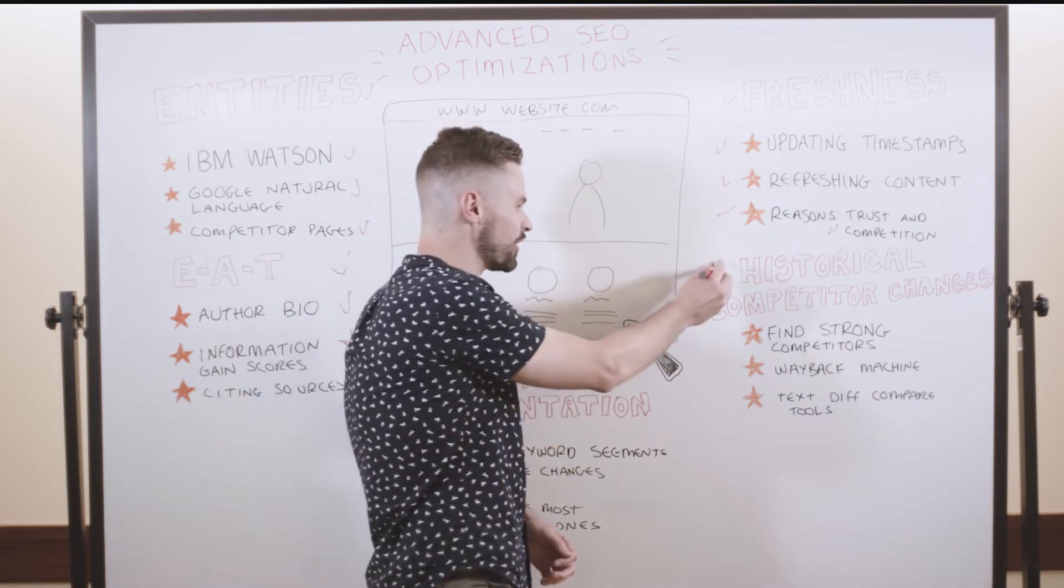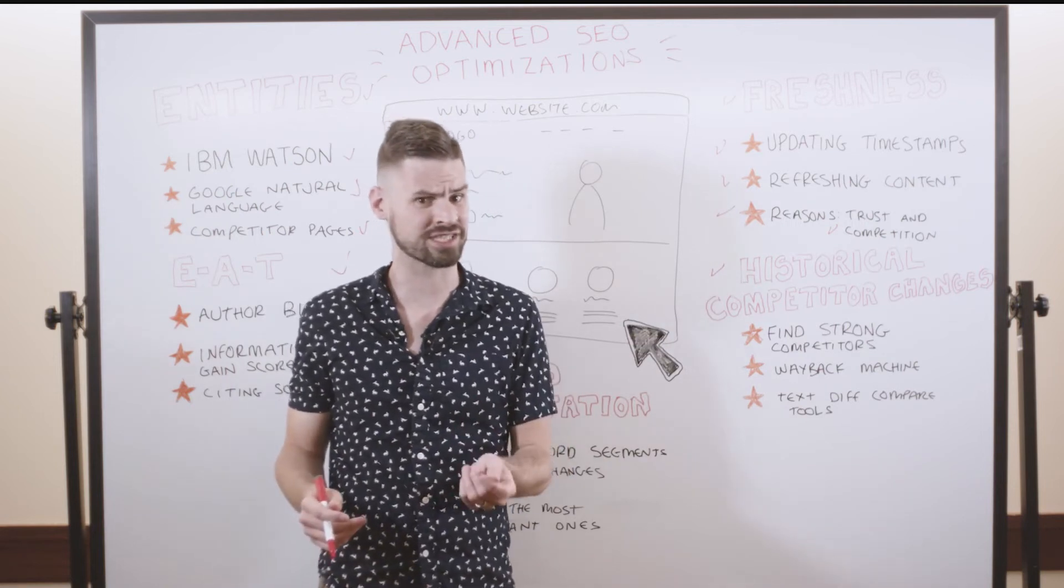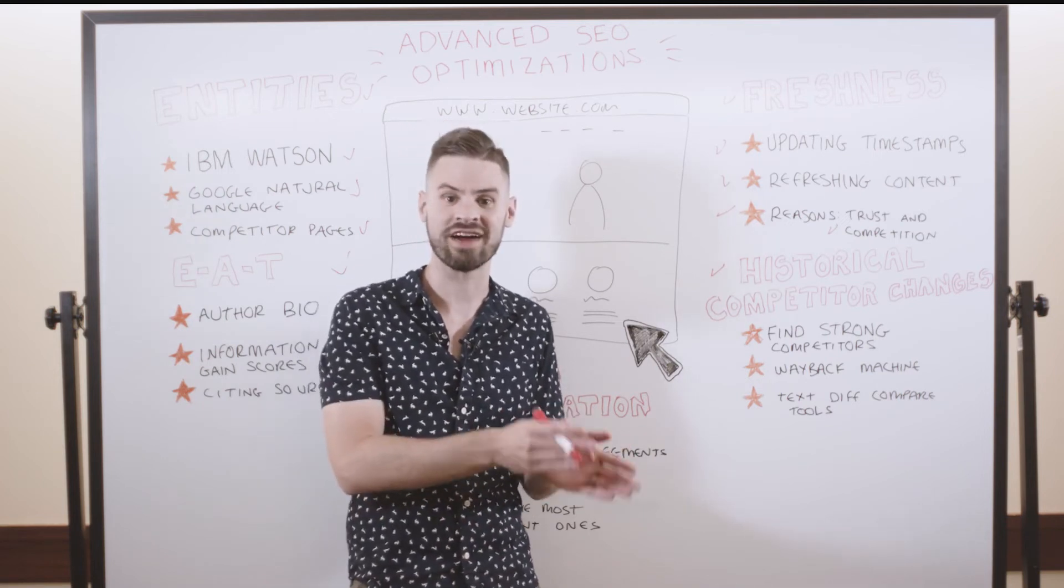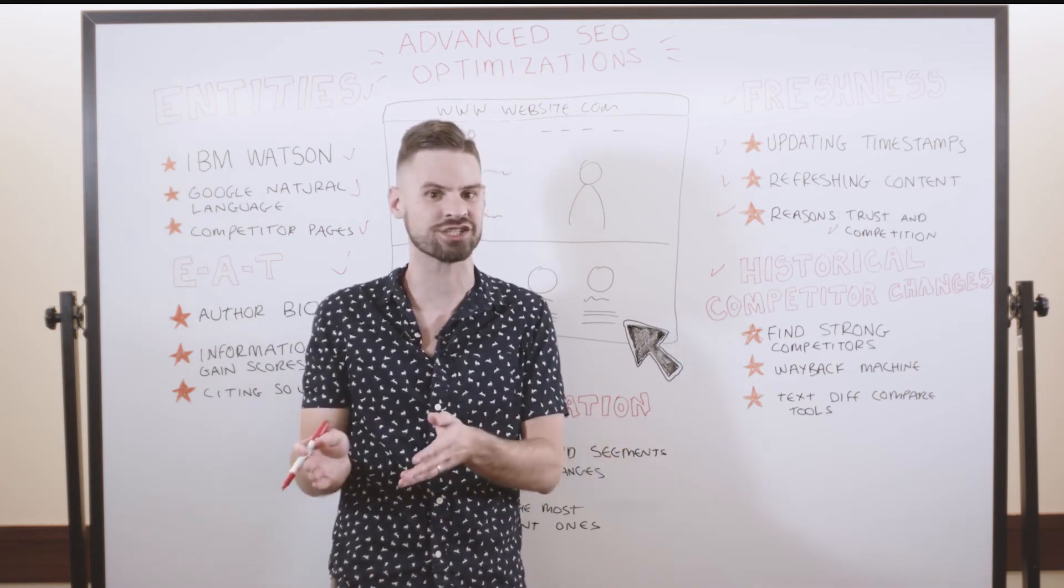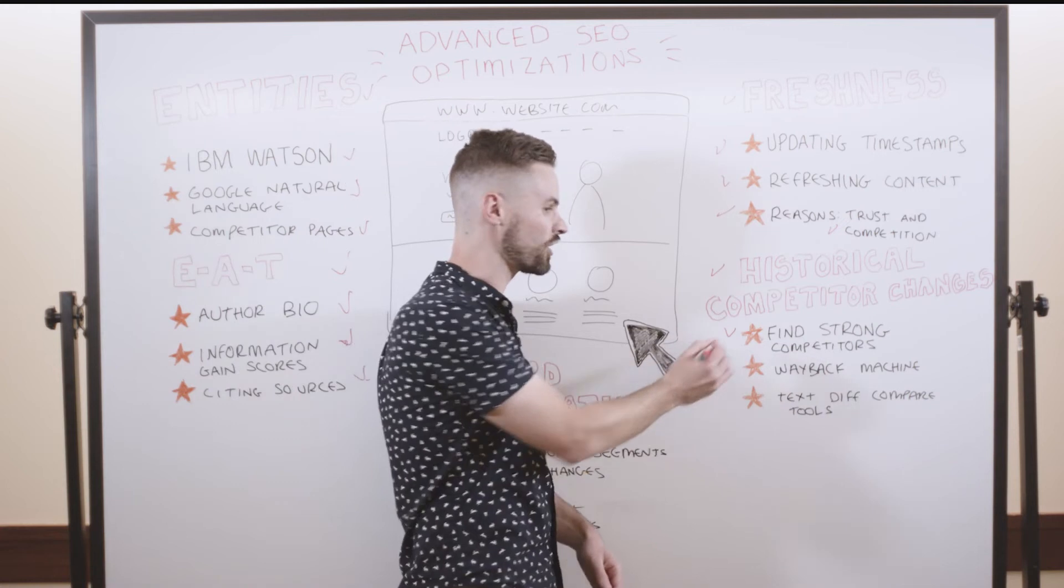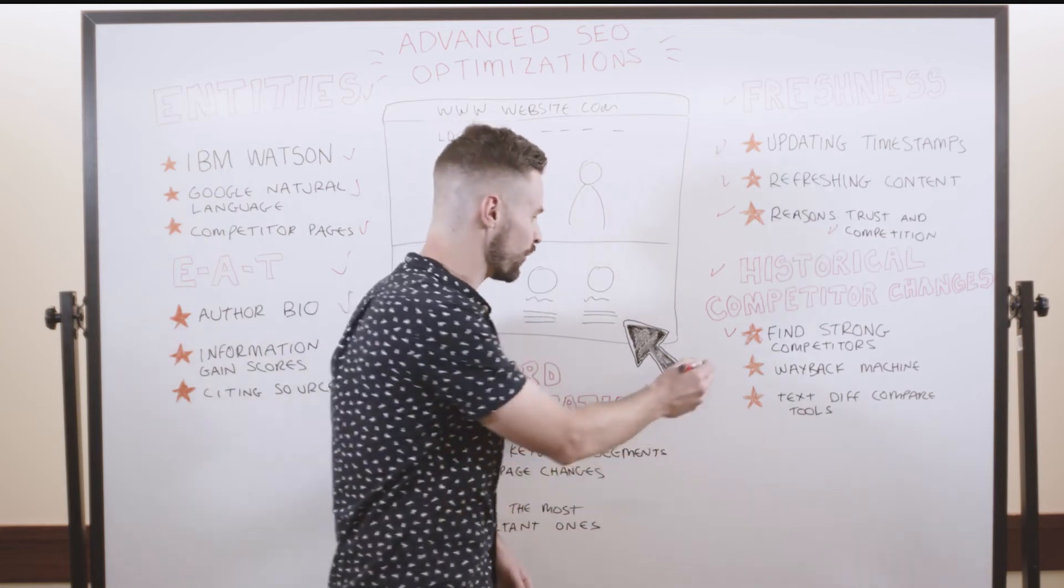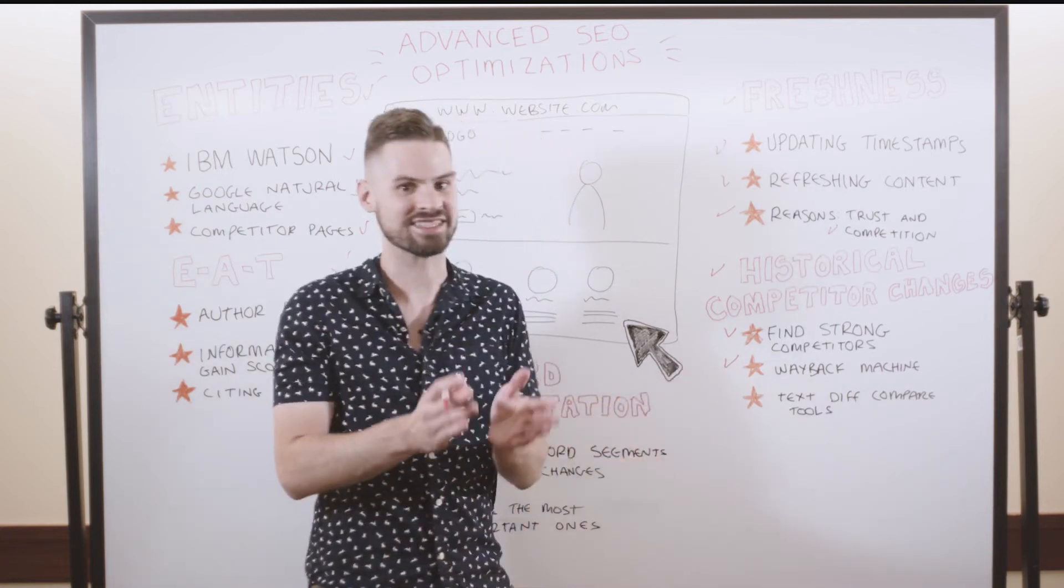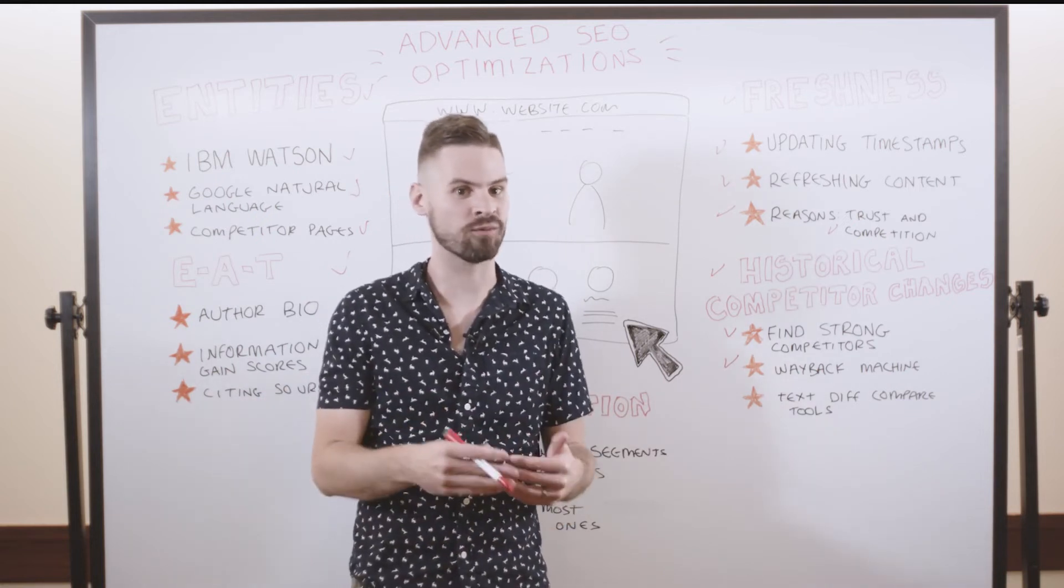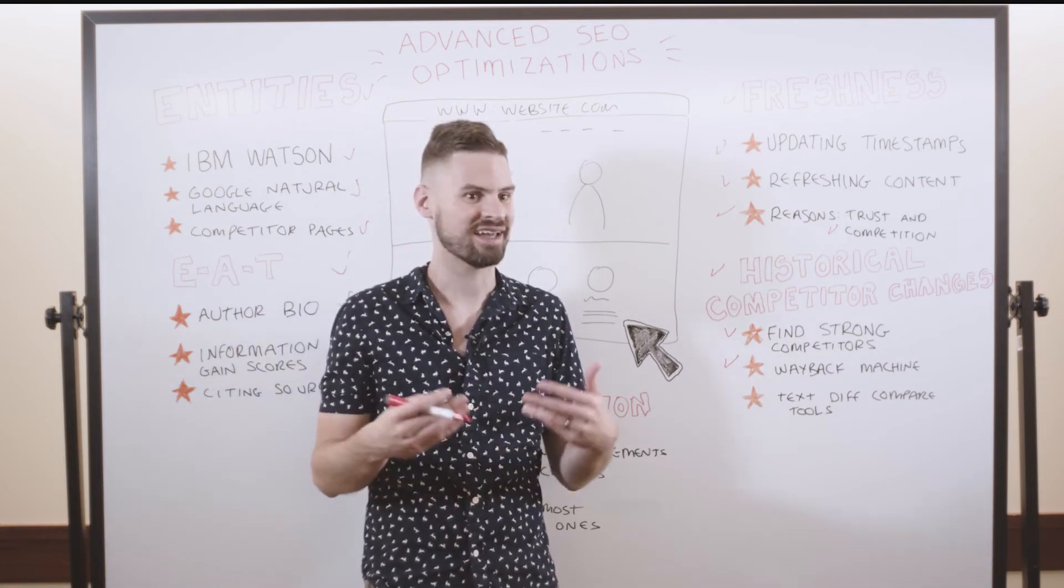Another great way of thinking about your on-page optimizations is this concept of historical competitor changes. Oftentimes, when we think about our on-page optimizations, we're only thinking about what competitors are doing in the given moment, but we're not telling the story of how they've changed their on-page optimizations in order to get to that point. So you can do this type of analysis for really competitive queries. What I like to do is find a strong competitor that's actually improved in the rankings in recent years, and then take that page and actually run it back through the Wayback Machine and see which on-page changes have they made over time. What content are they adding? What are they removing? And what are they keeping the same?